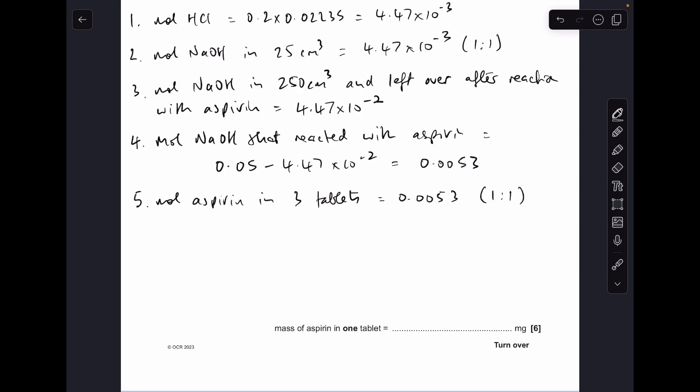If we factor in the information at the start of the question that the aspirin reacts with the sodium hydroxide in a 1:1 ratio, there must be 0.0053 moles of aspirin in those three tablets. So if we divide by 3, we get the moles of aspirin in one tablet. Then if we multiply those moles by the MR of aspirin, 180, we get that there's 0.318 grams of aspirin in a tablet. They want the answer in milligrams, so we multiply by a thousand: 318 milligrams of aspirin in a tablet.